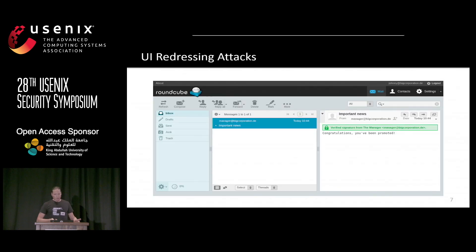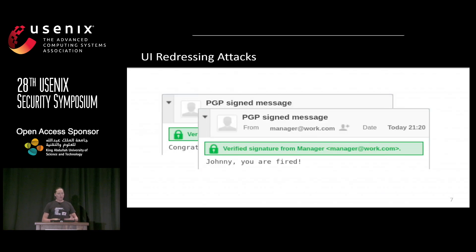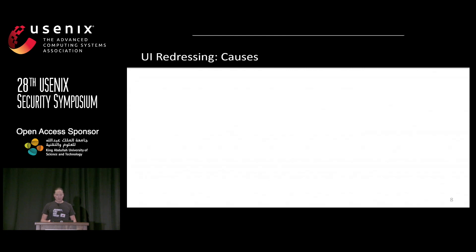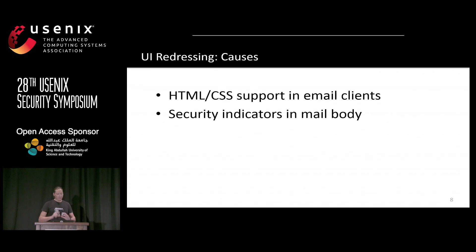For UI redressing, an attacker can look at the RoundCube source code, copy the HTML that displays a valid signature message, compose a new message with that HTML but change the actual content, and thereby spoof a visually indistinguishable email. This works because many email clients support HTML, CSS, and embedded images, and unfortunately many email client vendors display signature verification results in the email body — an attacker-controlled UI element.